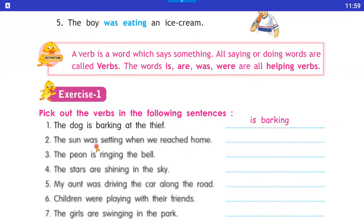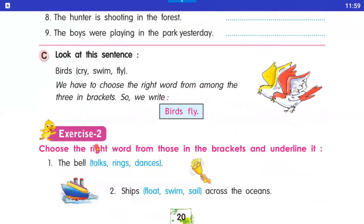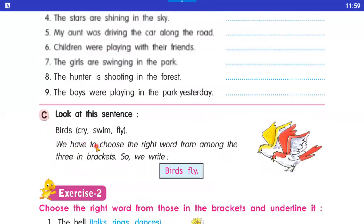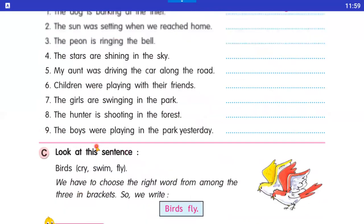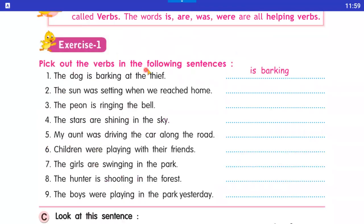Now let's start the exercises. Exercise number one: pick out the verbs in the following sentences. Humay nine sentences diye gaye hain, usme se humay verb word ko pick karna hai, with helping verb.